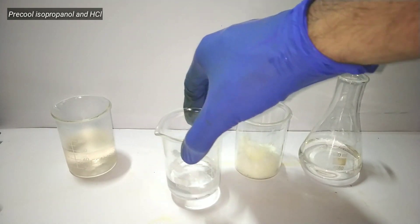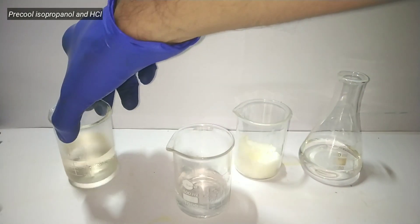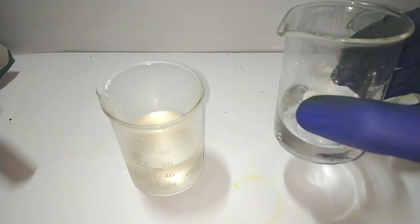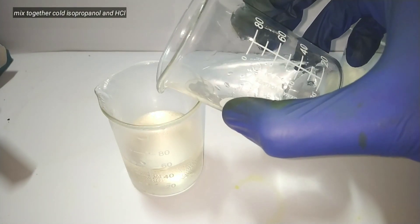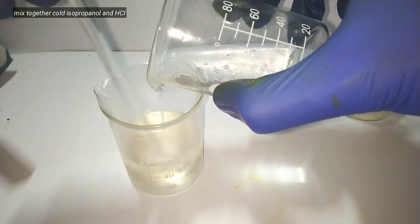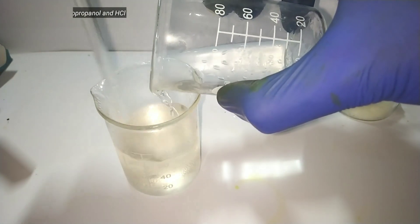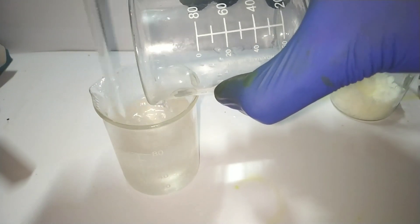First of all, we keep both the isopropanol and hydrochloric acid in the refrigerator for cooling. After cooling, we mix them together, using a glass stirring rod and continuously stir while adding the alcohol to the acid.